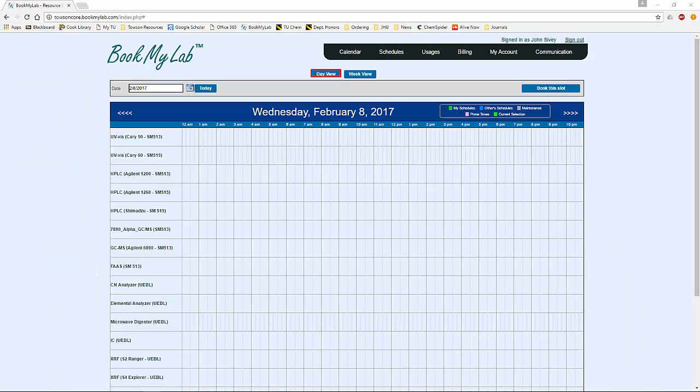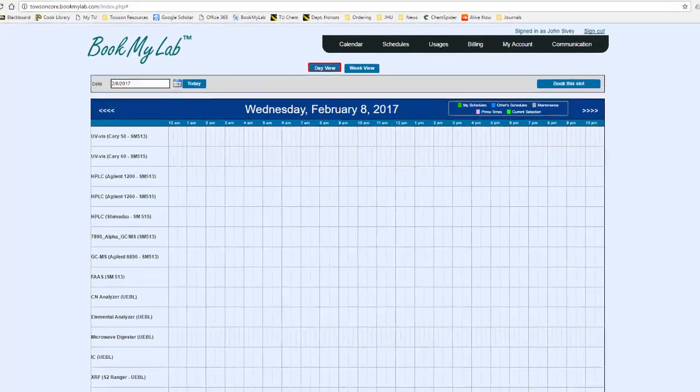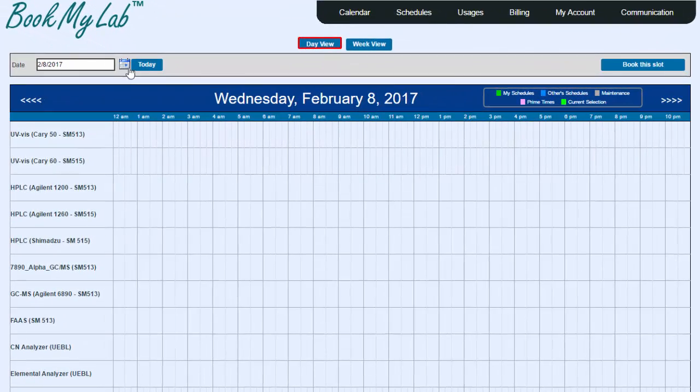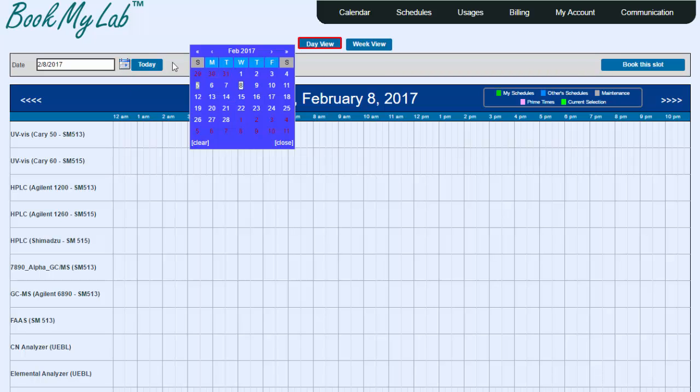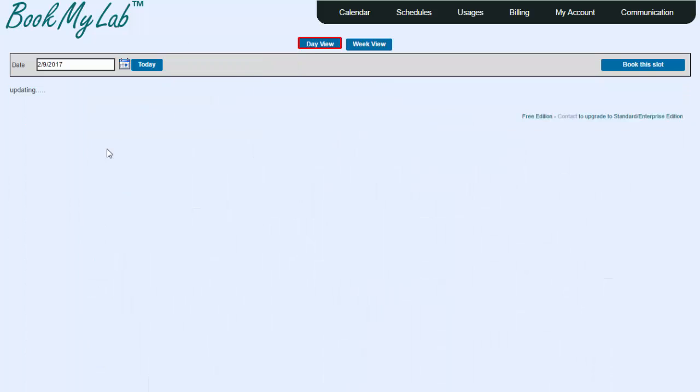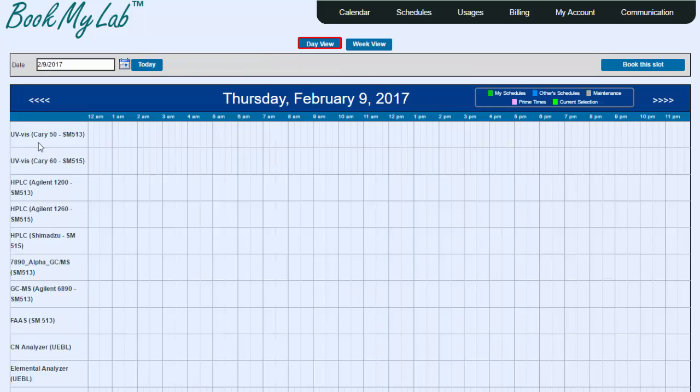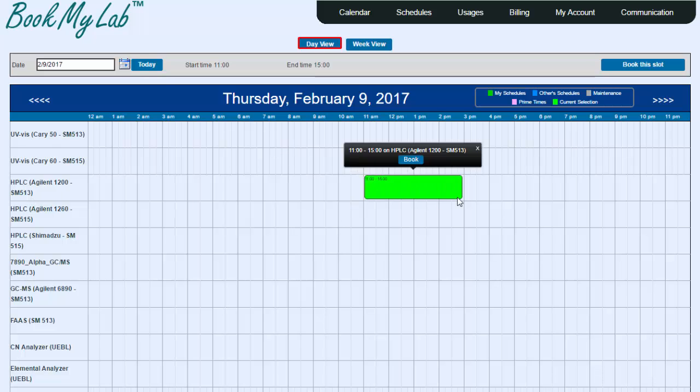After you log in to BookMyLab, you'll come to a page that looks like this. You can select the date in which you want to make a reservation by clicking on the calendar and then selecting the appropriate date. On the left hand side is a list of all of the instruments. If for example you wanted to reserve the HPLC Agilent 1200 model in Smith 513 on Thursday February 9th from 11am until 3pm, you can simply click on the appropriate time and select Book.